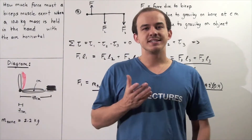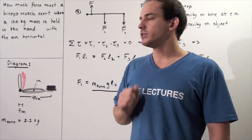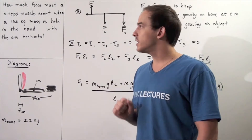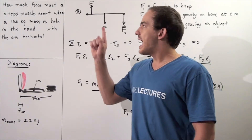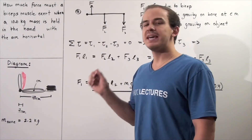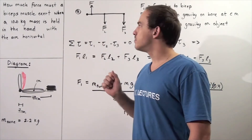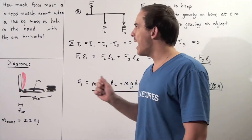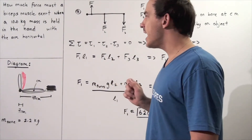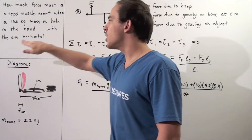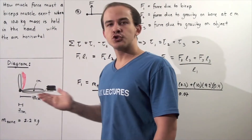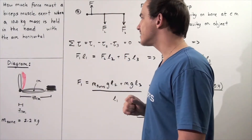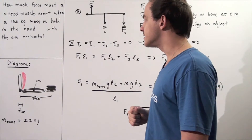Let's look at the following example that will deal with an object that is in static equilibrium. How much force must a biceps muscle exert when a 10 kilogram mass is held in the hand with the arm stretched outward along the horizontal axis?